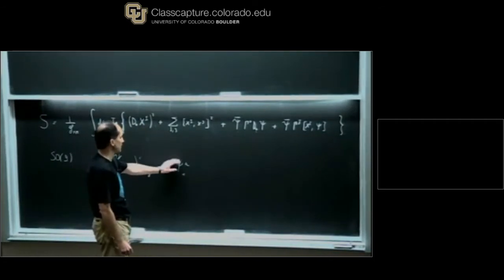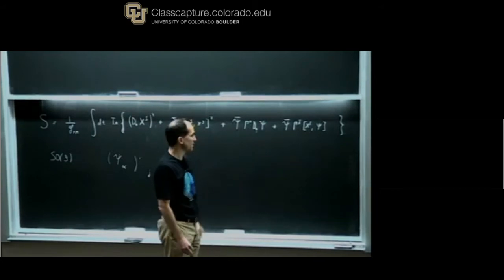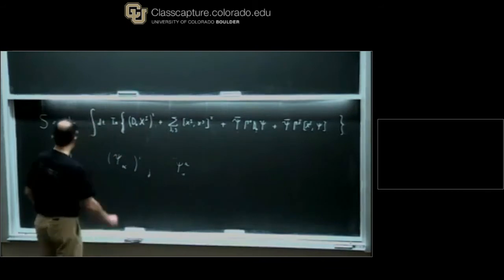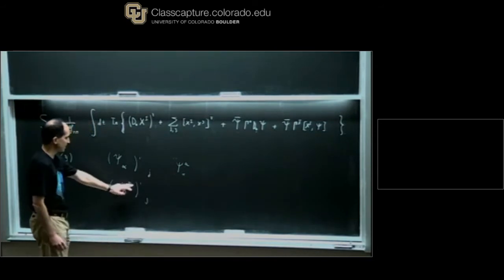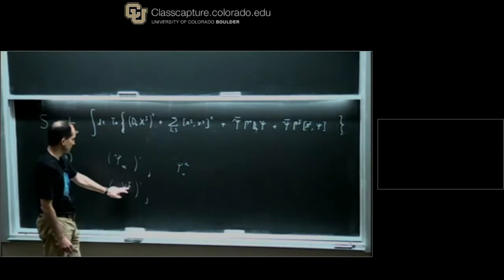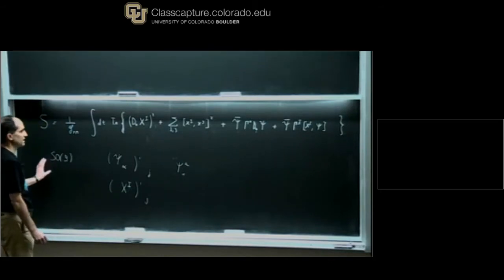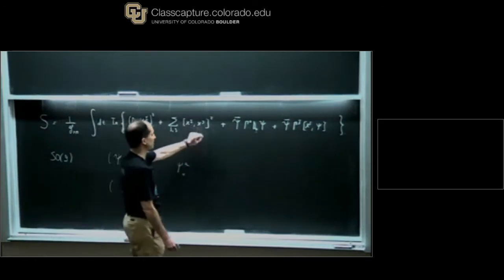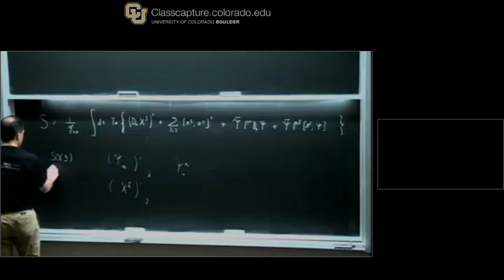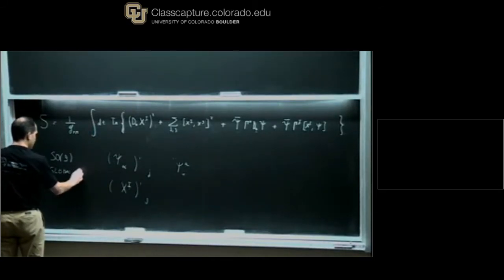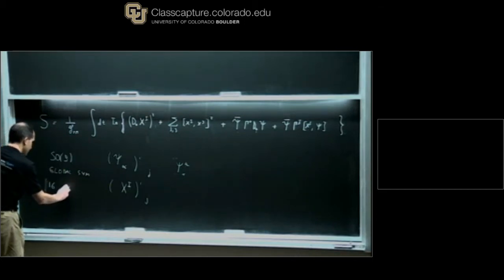So we have 16 times N squared Majorana fermions. This action is just the free action we wrote before for the SYK model. The model additionally has nine bosons Xi, which can be organized in N by N matrices. There are nine of these, transforming in the vector representation of SO9. So the model has an SO9 global symmetry, clear from the contraction of indices, and it also has 16 supersymmetries with this particular pattern of interactions.